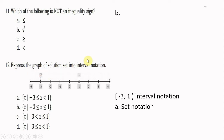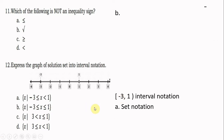Number 12: Express the graph of the solution set into interval notation. On the graph, the open circle at 1 means 1 is not included, and the solid dot at negative 3 means it is included. All the given options are set notation, not interval notation. In interval notation, a bracket means the number is included. The answer in set notation is letter A.